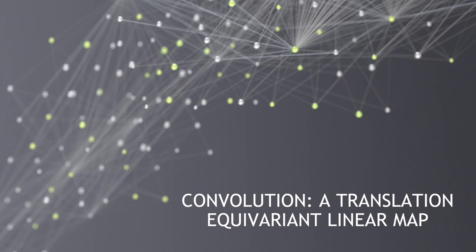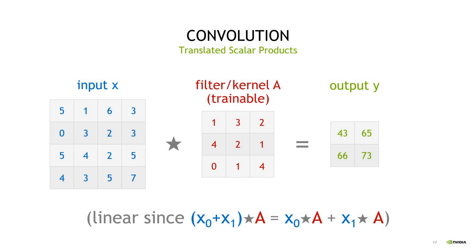As discussed on the previous slide, convolutions as a basic building block were very successful, but you might wonder why. Convolutions are a specific subset of linear maps, namely translated scalar products.